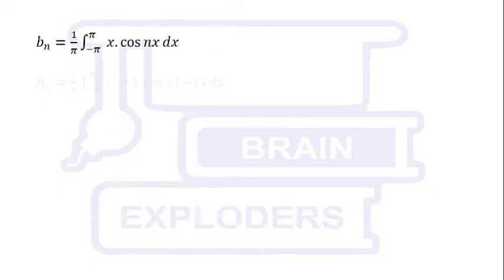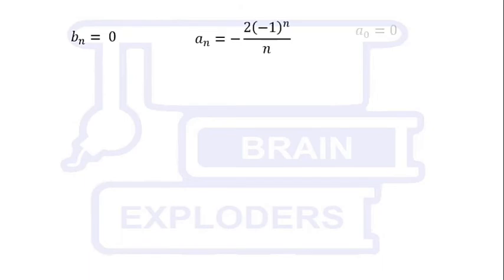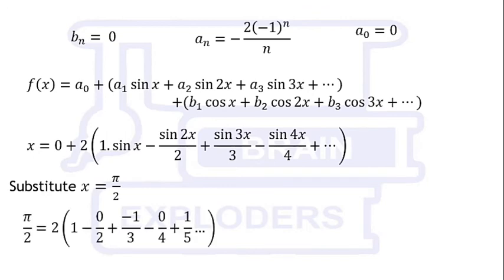bₙ can be easily calculated as 0 with the help of the property that integration of f(x) and -f(x) are equal for interval -a to +a. Put the values of these constants to get expansion of x. After that, on taking x = π/2, we get the value of our first series, that is 1 - 1/3 + 1/5 and so on = π/4.